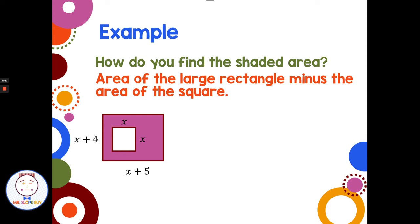So we had already found the area of the rectangle with x plus 4 and x plus 5 as length and width. We found it as x squared plus 9x plus 20. And we want to subtract away the area of the square, which is x squared.